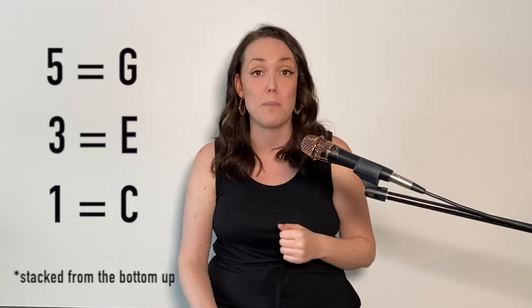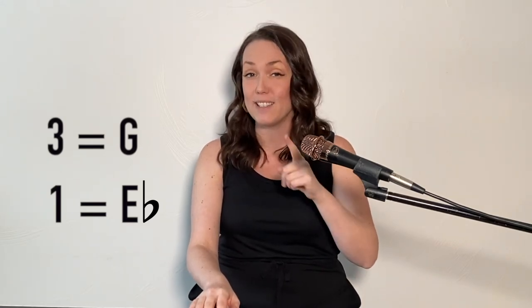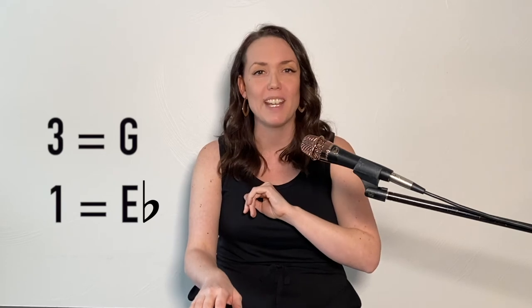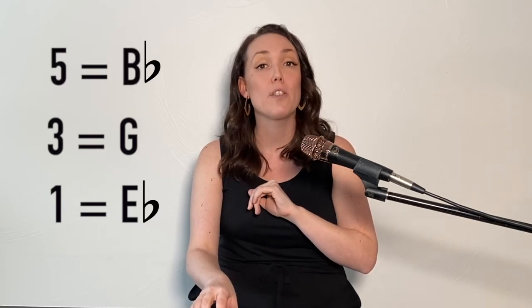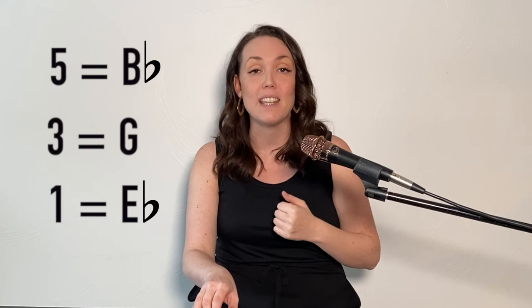There's our C major chord. Let's check out an E flat major chord. We know E flat in the E flat major scale is 1, the 3 is G, and the 5 is — if you said B flat, you're right. 1-3-5. E flat major.